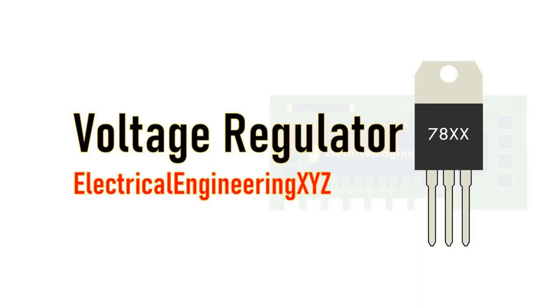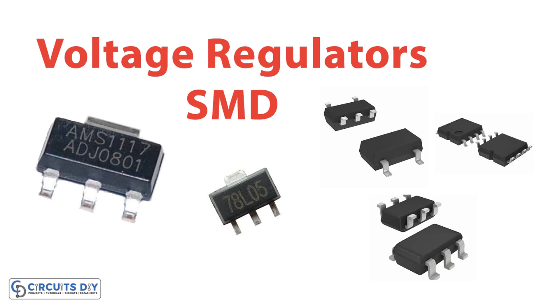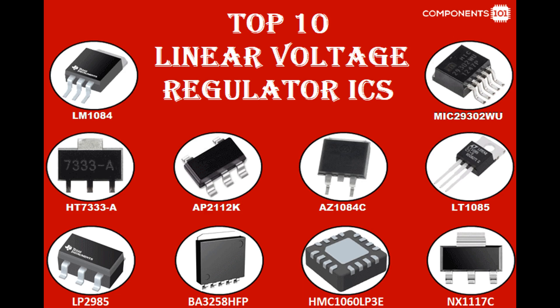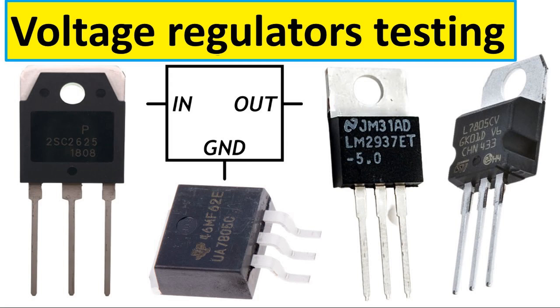Regardless of the mode of operation, the control element is driven by the error signal generated by the error amplifier. The error signal determines how much the control element should adjust the voltage to bring the output voltage in line with the reference voltage. This adjustment is continuously monitored and fine-tuned through feedback mechanisms within the voltage regulator IC to maintain a stable output voltage despite changes in input voltage and load conditions.